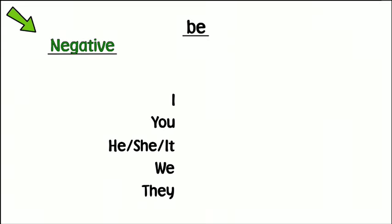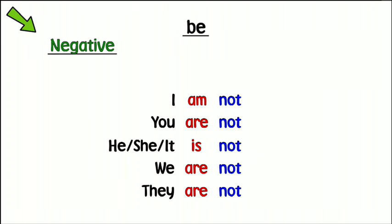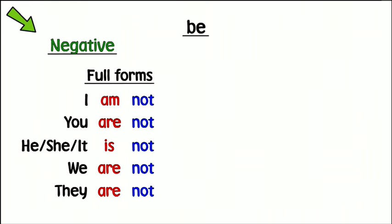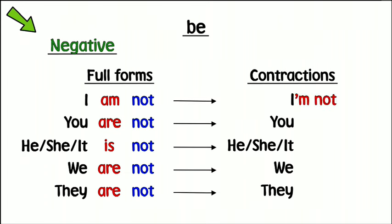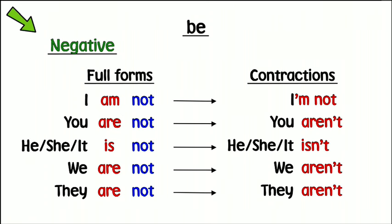To make the negative forms of 'be', we add 'not'. There are full forms and contractions of 'be' negative. Note that the contraction for 'I' is different from the other short forms in 'be' negative.